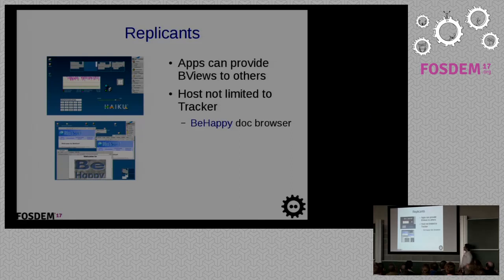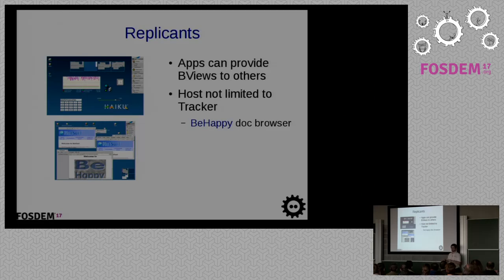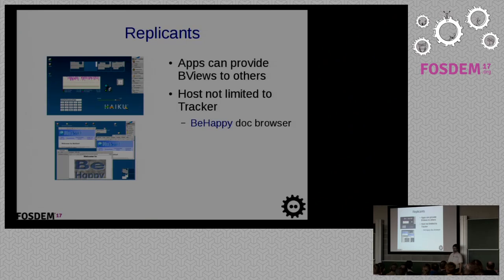We have what we call replicants. You've seen Plasma earlier with widgets — it's a bit like that, except one application can provide a BView (the base canvas of the toolkit) to another application. It's not limited to the desktop; it can be used by any application. For example, there's a documentation browser called Be Happy which used to load the NetPositive replicant, and I fixed it to use the NetSurf replicant to display the HTML documentation.